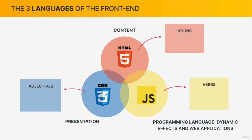We can also use the analogy of nouns, adjectives, and verbs to understand the separation of roles. HTML represents the nouns — for example, saying that the p-element is a paragraph. CSS is the adjective, because it describes the noun — like saying the paragraph text is red, so 'red' is the adjective describing the noun. Finally, JavaScript is the verb — like saying 'hide the paragraph', meaning we're actually doing something. With this, we finish our introduction to web development, and we're now ready to start working with HTML and CSS code in this course.